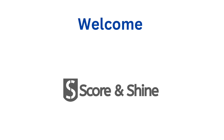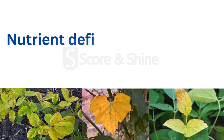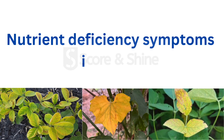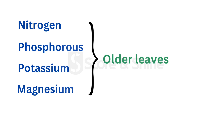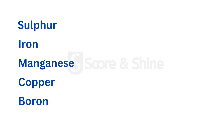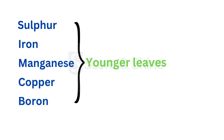Welcome back. This video will be all about the various symptoms in crops due to nutrient deficiency, which are most confusing. In general, deficiency of nitrogen, phosphorus, potassium, and magnesium occurs first on older leaves, and deficiency of sulfur, iron, manganese, copper, and boron appears first on younger leaves.